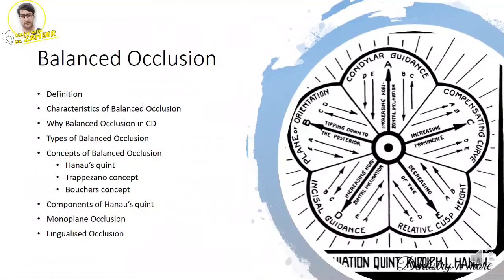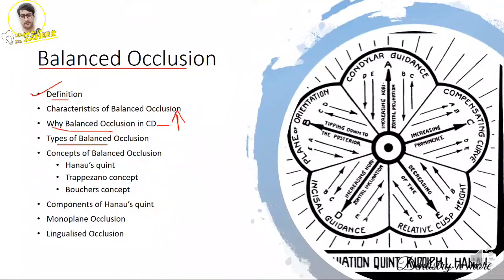The most frequently asked question is balanced occlusion. When writing an answer on balanced occlusion, start with the definition: bilateral simultaneous anterior and posterior contact of teeth. You must write according to GPT-2. Next, write the characteristics of balanced occlusion — how teeth contact in propulsive and lateral excursive movements — and why balanced occlusion in complete dentures is primarily to increase the stability of dentures.